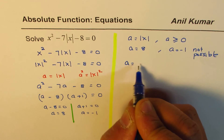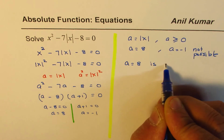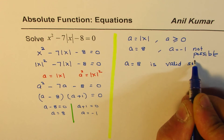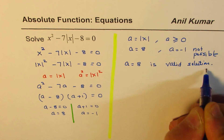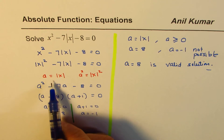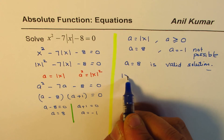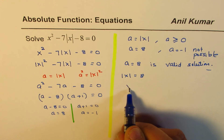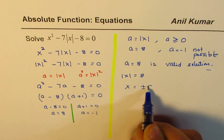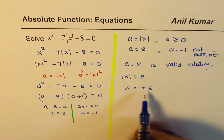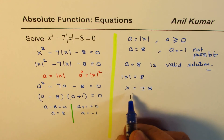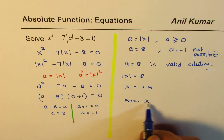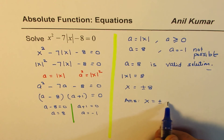So, a equals to 8 is the valid solution. Now, what is a equals to? A is absolute x. So, we can write this as absolute x equals to 8, and that means x equals to plus or minus 8. So, we have two solutions to this equation: plus or minus 8. We can write down our answer as x equals to plus or minus 8.